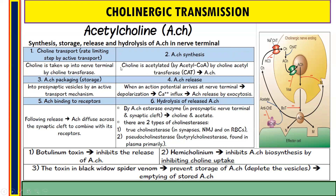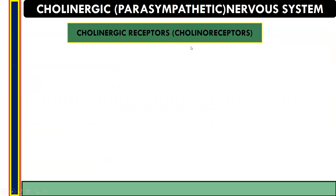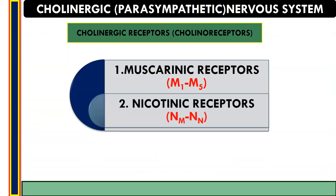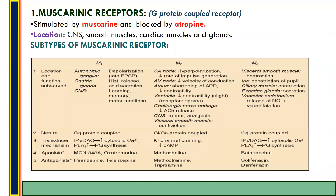To summarize, the six steps are: first, choline transport; second, acetylcholine synthesis; third, acetylcholine packaging and storage; fourth, acetylcholine release; fifth, acetylcholine binding to the receptor; and sixth, hydrolysis of released acetylcholine. Next are cholinergic receptors, also called polynode receptors. There are two types: muscarinic receptors with subtypes M1 to M5, and nicotinic receptors with subtypes NM and NN. Muscarinic receptors belong to the G protein-coupled receptor family, are stimulated by muscarine, and blocked by atropine. They are located on the central nervous system, smooth muscle, cardiac muscle, and glands.